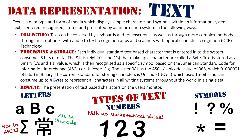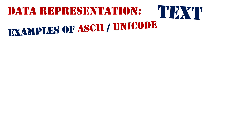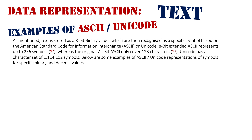This will become more clear as we cover other types of data representation. I want to go into a little more detail on the examples of ASCII and Unicode, just so you have a bit of understanding of how these translations work and the logic behind it. Text is stored as 8-bit binary values, which are then recognized as specific symbols based on ASCII or Unicode. 8-bit extended ASCII represents up to 256 symbols — 2 to the power of 8 — which is a whole byte of data.